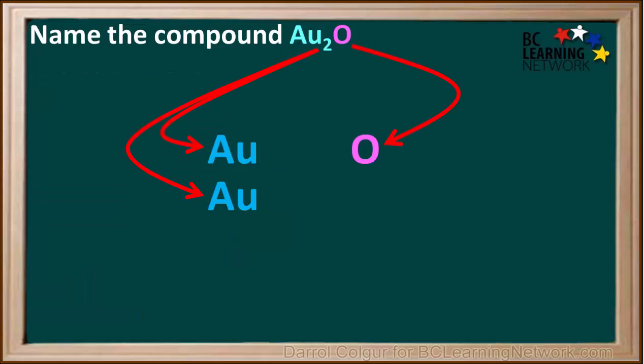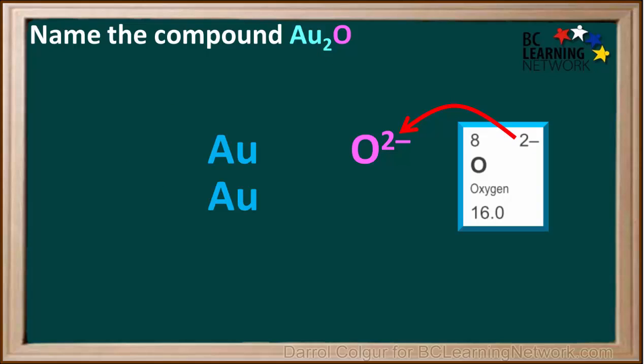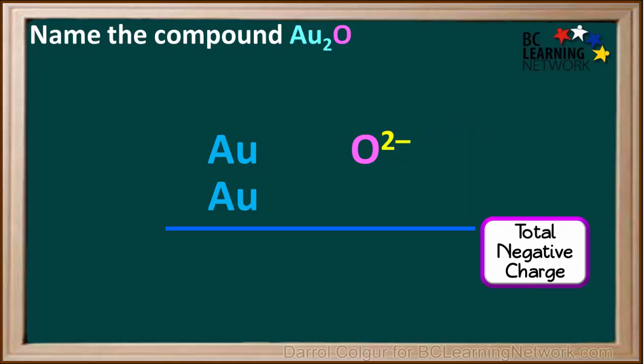The formula tells us we have two gold ions and one oxide ion. We start with the negative charge. The periodic table tells us the charge on one oxide ion is negative 2. There is only one oxide ion, so the total negative charge is negative 2.